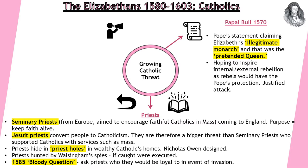As a result, priests are hunted by Walsingham and his spies. If they're caught, they would be executed. This leads to something called the 'bloody question' in 1585 — any arrested priest would be asked this question, basically asking them: in the event of a foreign invasion to reinstate Catholicism, who would they be loyal to? If they say they'd be loyal to the papacy — the Pope — they're going to be executed for treason. But if they say they're going to be loyal to Elizabeth, their life would be spared, but they've abandoned the Catholic faith.